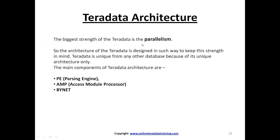The biggest strength of Teradata is parallelism. The architecture of Teradata is designed with this strength in mind. Teradata is unique from any other database because of its unique architecture. The main components of Teradata Architecture are Parsing Engine (PE), AMP — Access Module Processor — and Binet. Parallelism is implemented right in the architecture through these three main components.